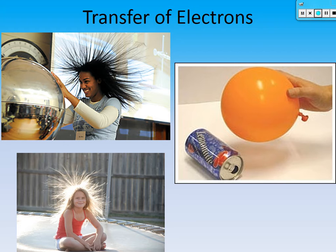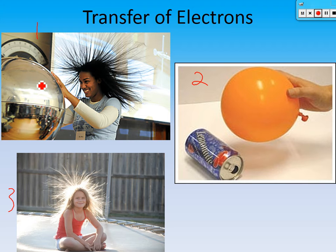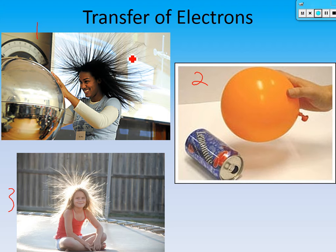Looking at this slide with three pictures: picture two shows polarization because the objects are not touching — charges are moving over a distance. Picture one shows conduction — the girl is touching the Van de Graaff generator and charges are moving between them. Picture three shows friction — she rubbed her feet on the trampoline. And why does her hair stand up? Like charges don't like to be near each other, so individual strands with the same charge separate and stand apart from each other.